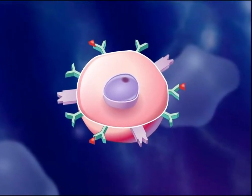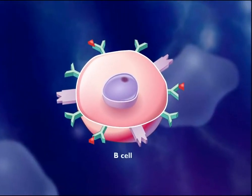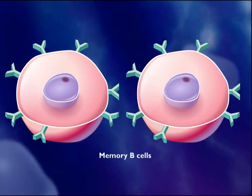Some of the B-cells do not turn into antibody factories, but instead become memory B-cells that may survive for several decades. Because of these memory B-cells, the secondary immune response to a future infection by the same pathogen is swifter and stronger. This powerful secondary immune response is what gives immunity to some diseases after you have had them once or after you have been vaccinated.